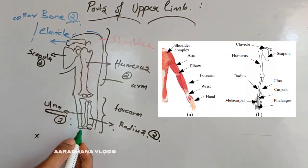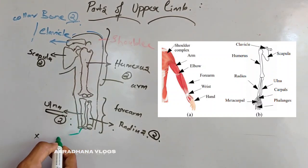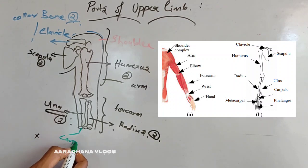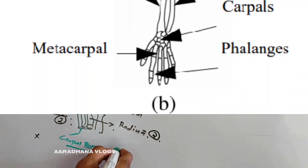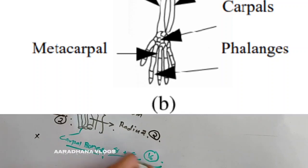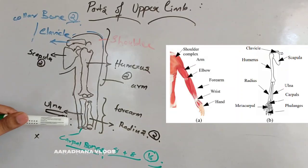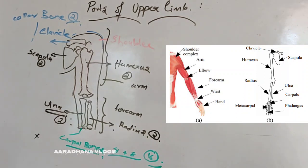After this, as you can see in the original picture, there are carpal bones which make up the wrist joint. There are totally eight carpal bones on the right side and eight on the left side, making a total of 16 carpal bones. This number is very important from the entrance exam point of view.